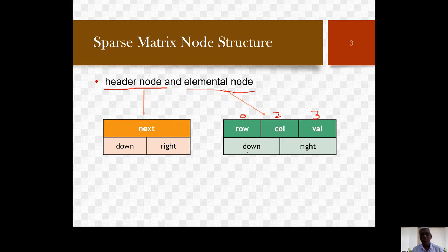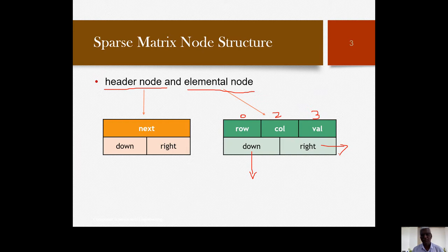The down pointer points to the downward list — meaning it connects elements in the same column going downward. The right pointer connects elements in the same row going rightward, pointing to the next non-zero element in that row. So we store only the non-zero elements in elemental nodes. If there are six non-zero elements, we will have only six elemental nodes.